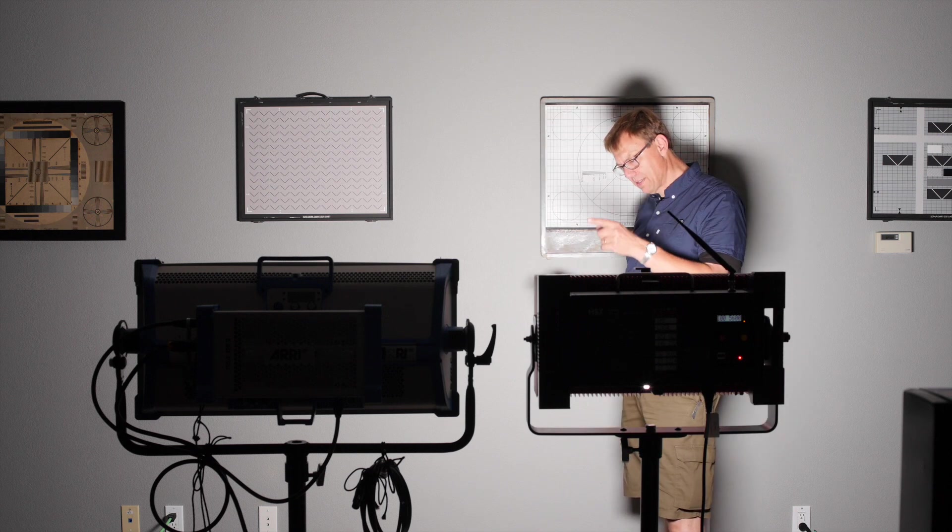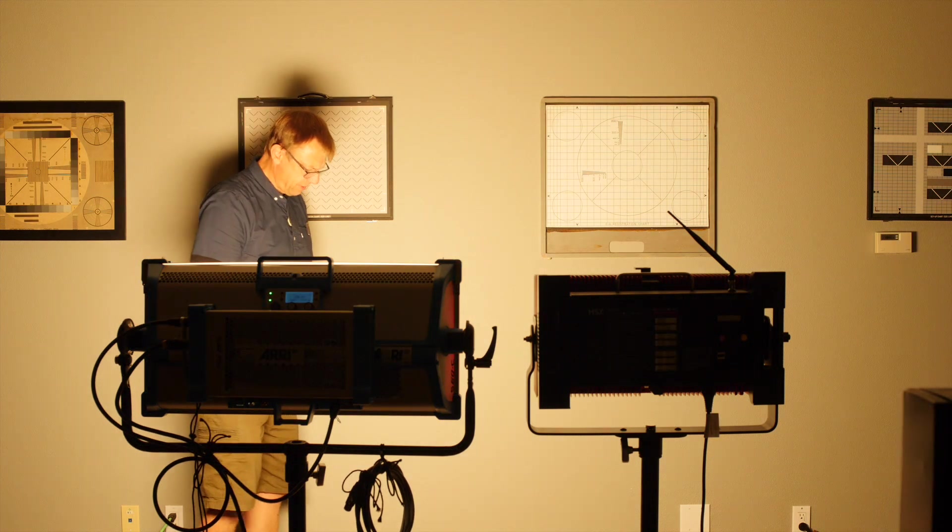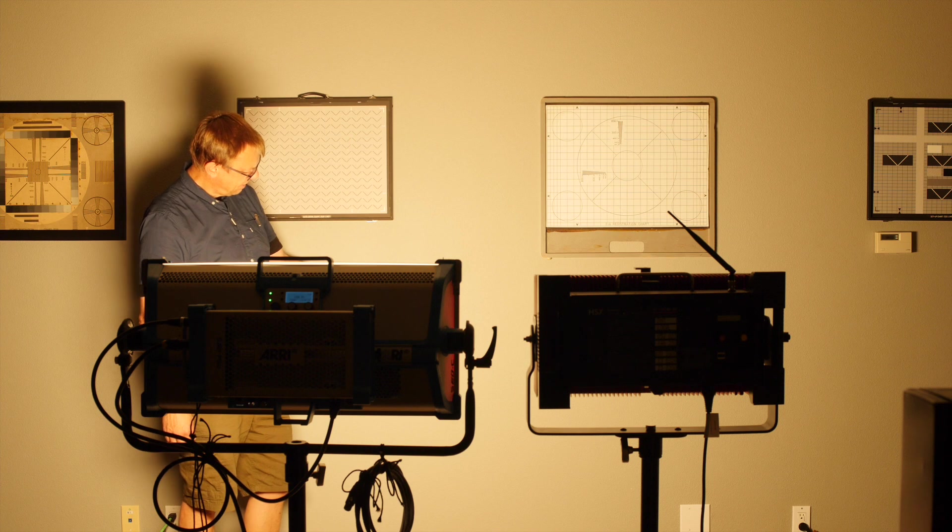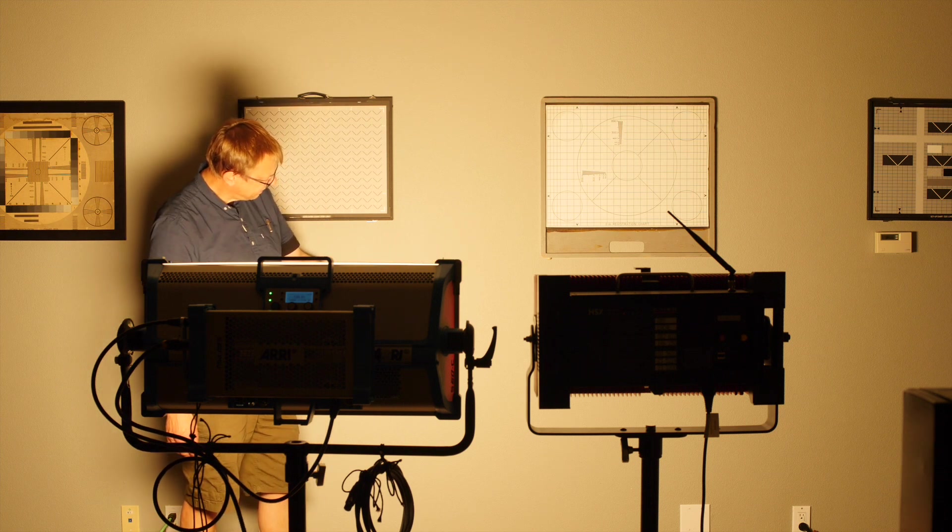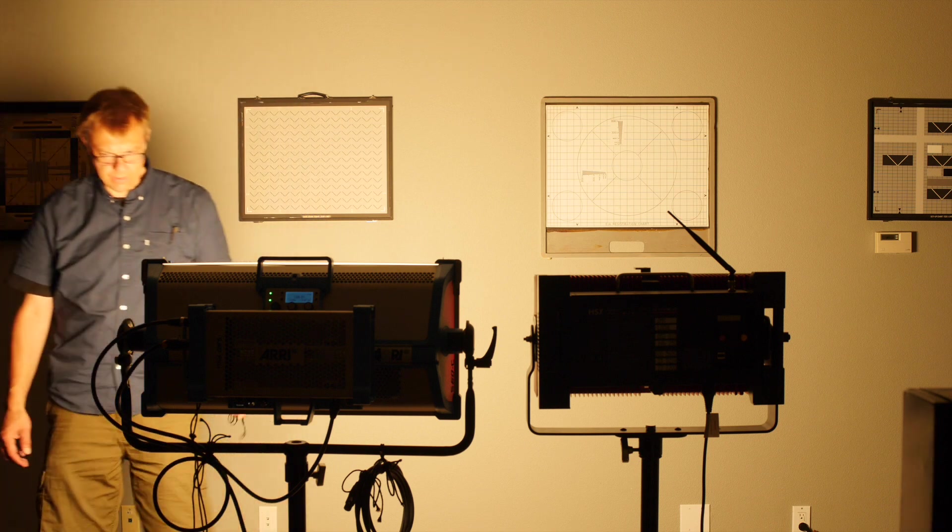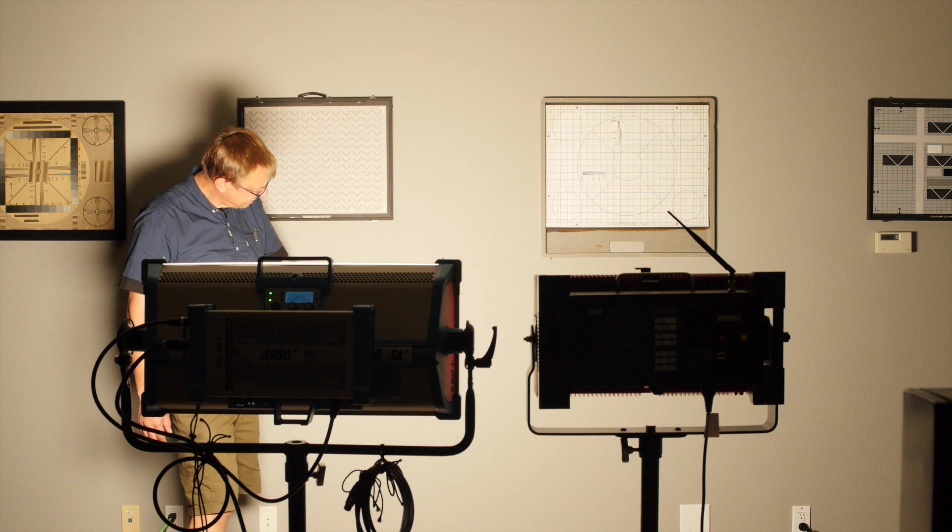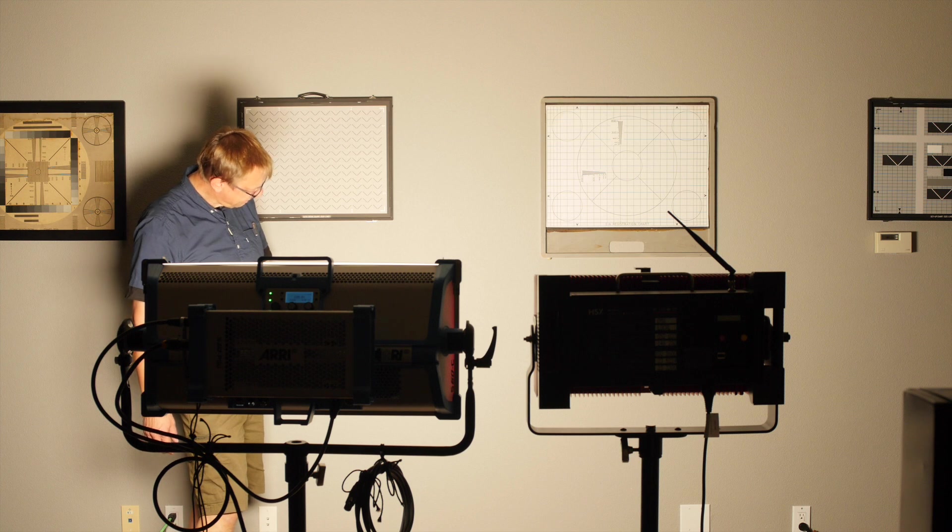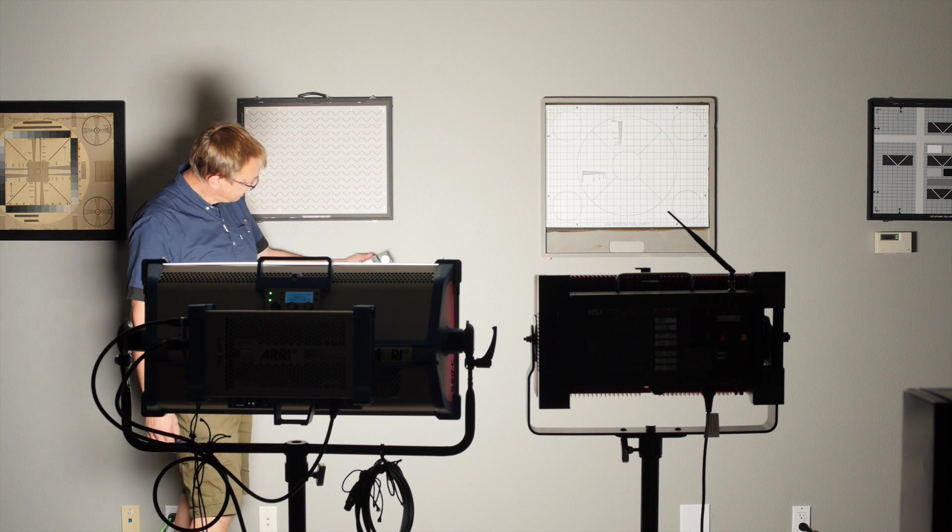Okay, so now let's test this against the SkyPanel. So we have the SkyPanel full intensity, 100%, and this is 3,200. So at 3,200, we've got 273, 275. Now let's try 4,300 - 100% and 4,300 Kelvin, and we've got 298, 300 foot candles. And here we've got 5,600 - 296, 295.